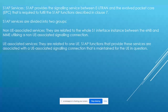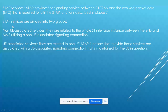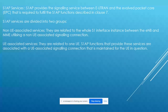Now let's discuss services provided by the S1AP protocol. There are two groups of services: UE-associated and non-UE-associated. Non-UE-associated services are mostly used for the signaling connection between the eNodeB and MME — that is the non-UE-associated signaling connection.